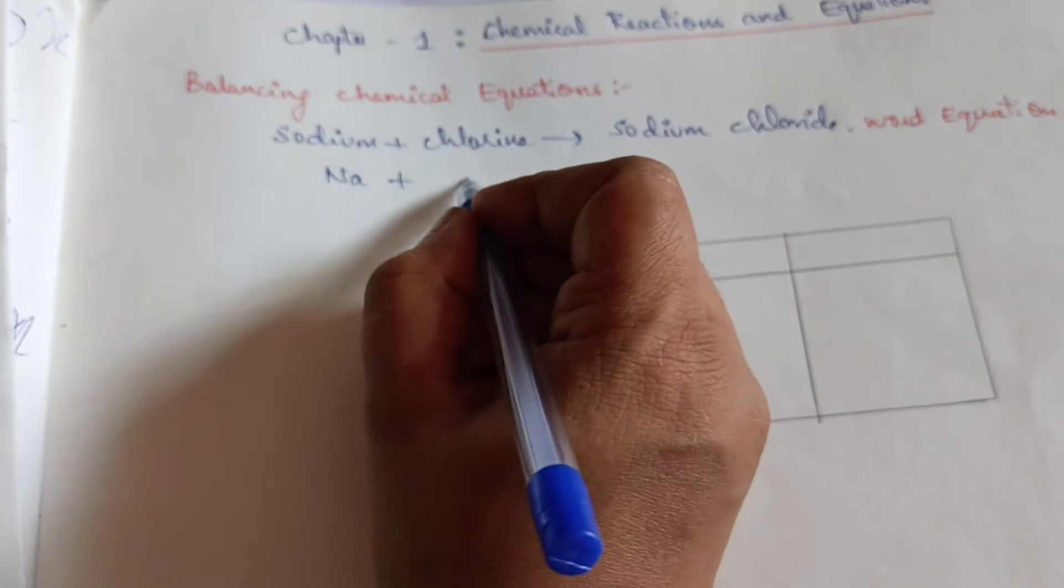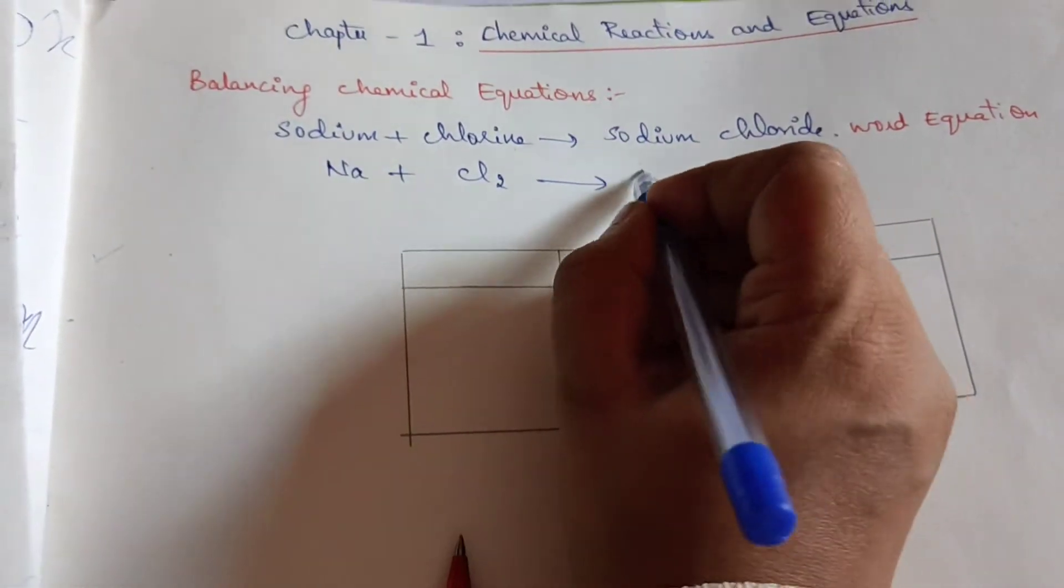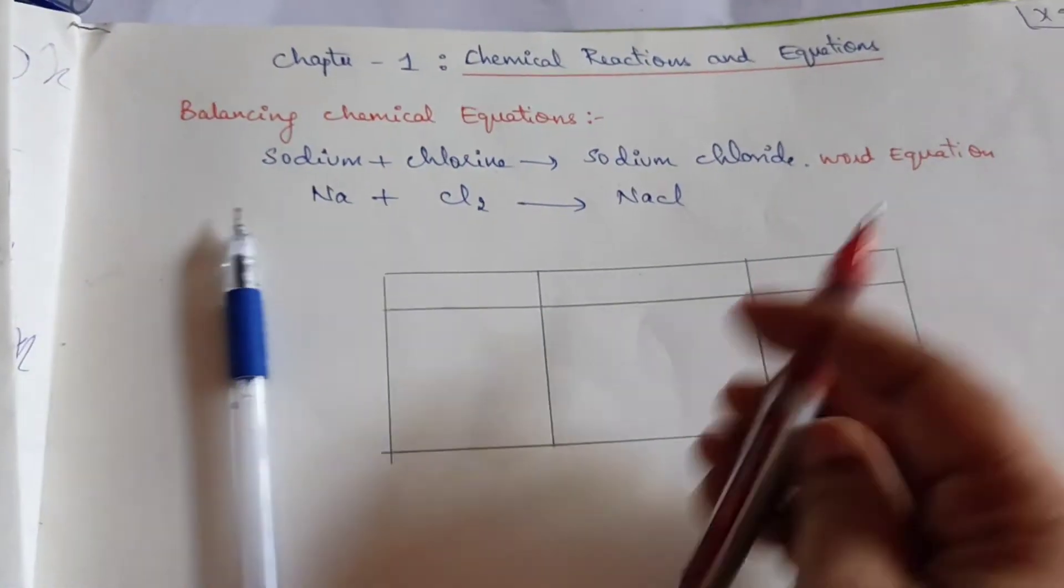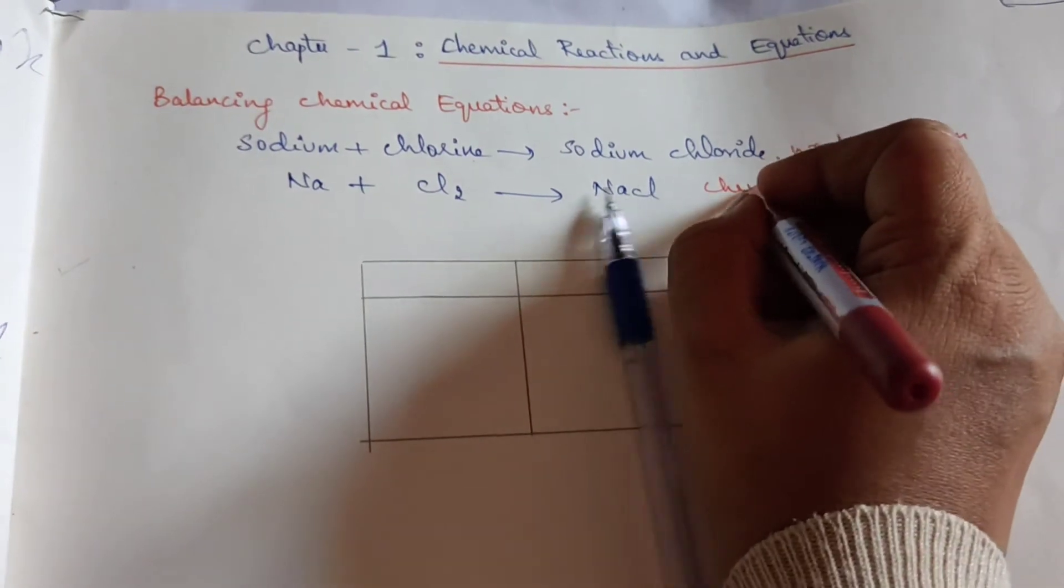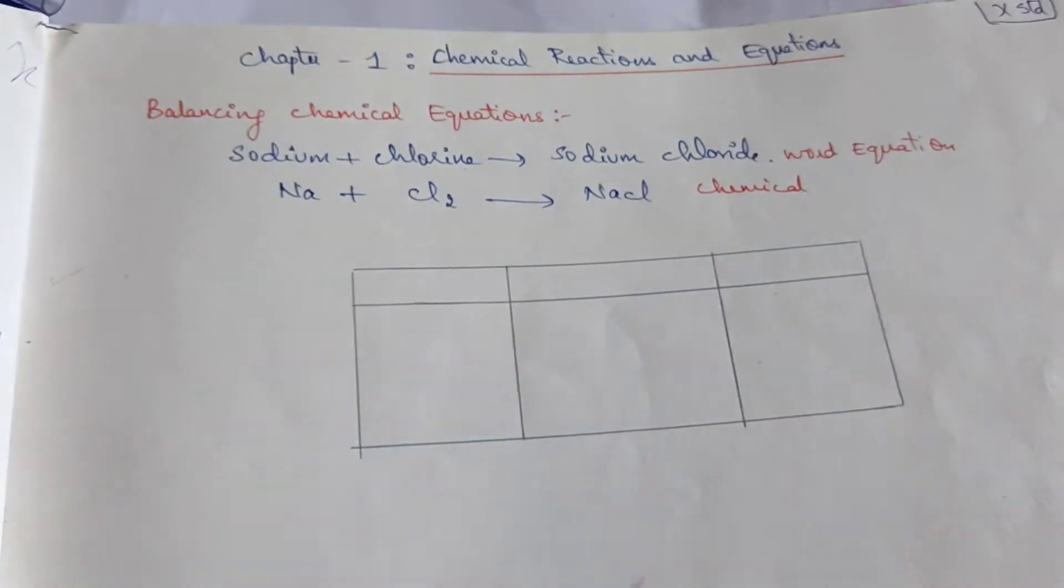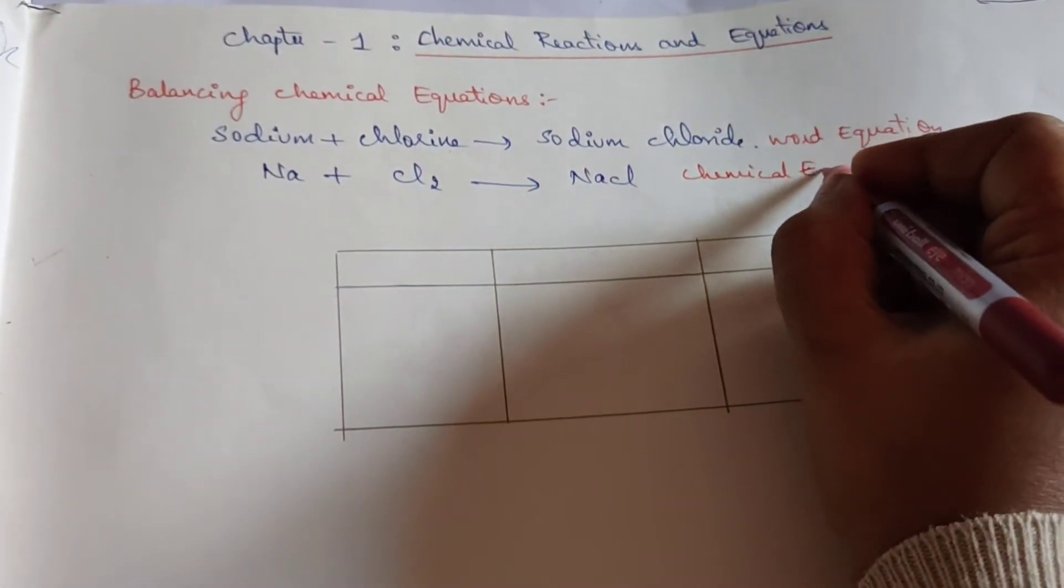Sodium symbol is Na, chlorine is Cl2, sodium chloride is NaCl. This equation is called a chemical equation.